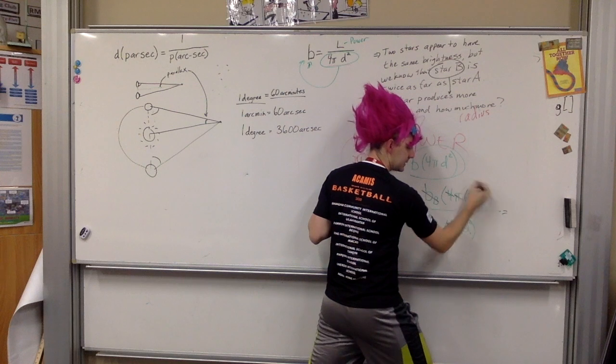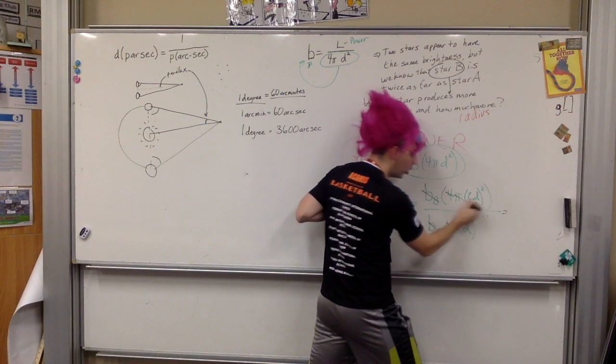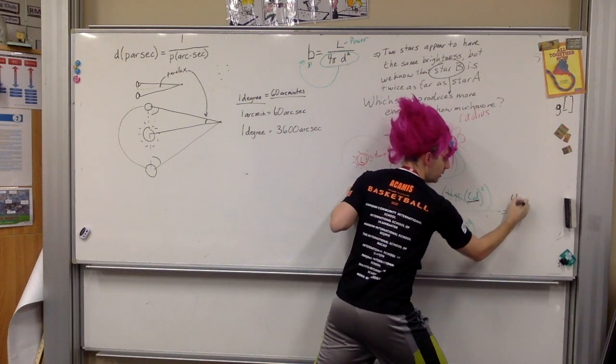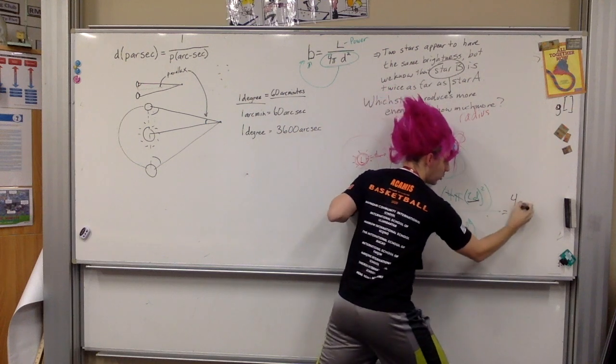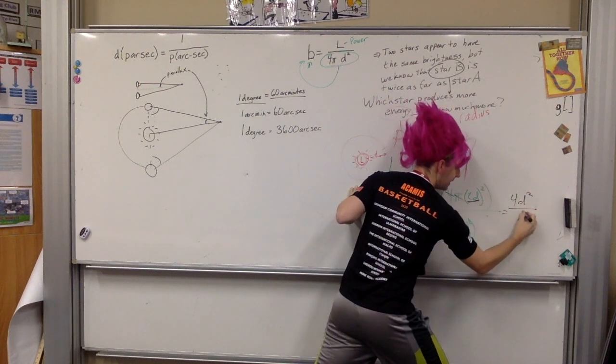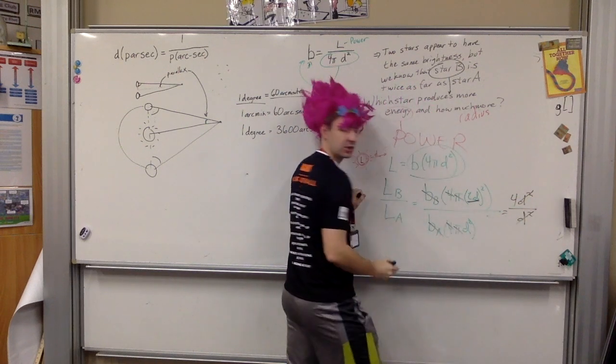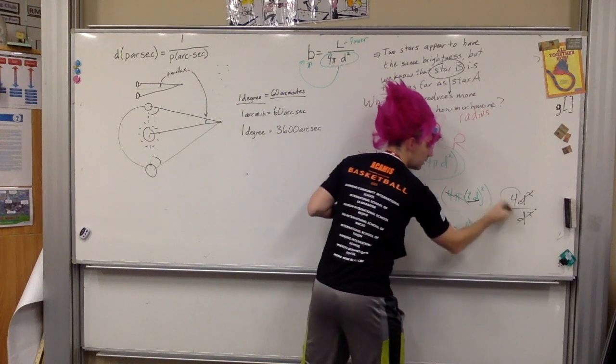Now, this, because the squared is on the outside, the whole distance has to be squared. This turns into 2 squared, which is 4, and d squared. At this point, I've got on the bottom d squared, the two d squareds are going to cancel out.